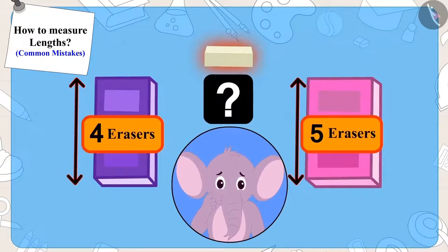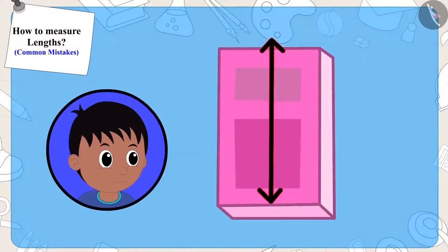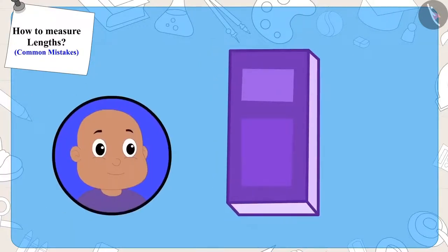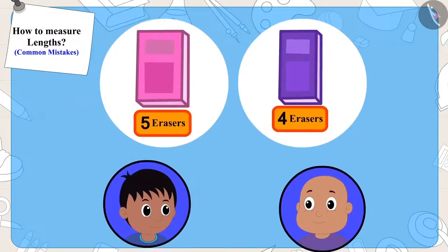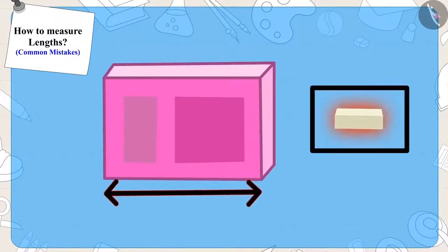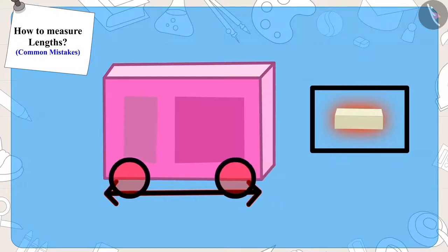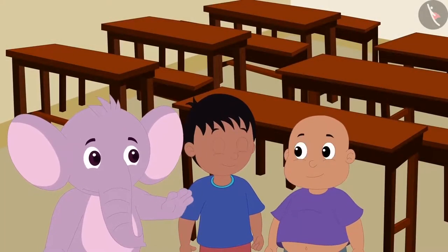Children, can you tell me why and how did this happen? Raju had measured his notebook placing the eraser correctly. But while measuring his notebook, Bablu placed the eraser a little above the bottom end. That is why the length of his notebook was four erasers long instead of five. Children, remember, whenever we measure the length of an object with the help of another object, we should measure the length from one end of the object to the other end. Appu made Raju and Bablu understand this.